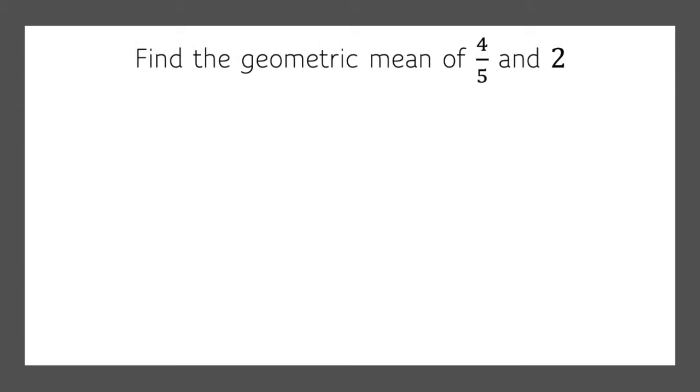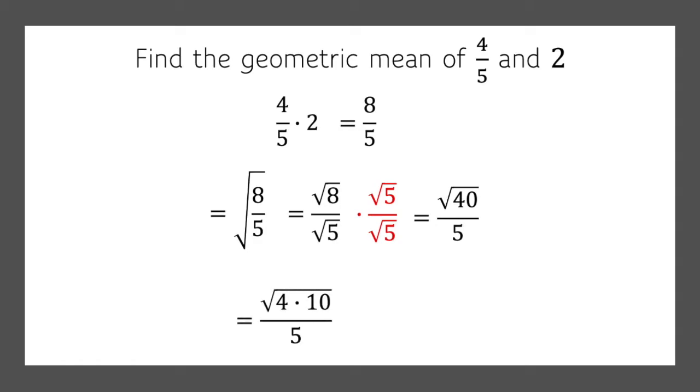How about the geometric mean of 4 fifths and 2? Now don't panic if you see a fraction. Same process. 4 over 5 times 2 is 8 over 5. Now we have to take the square root of 8 over 5. We can't have a square root in the radicand so we need to break this up. The square root of 8 divided by the square root of 5. We can't have a radical in the denominator so we need to rationalize the denominator. Multiply the top and bottom by the square root of 5 and we get the square root of 40 over 5. And the square root of 40 can break down into 4 times 10. Got to get that 4 out and we have 2 root 10 over 5.